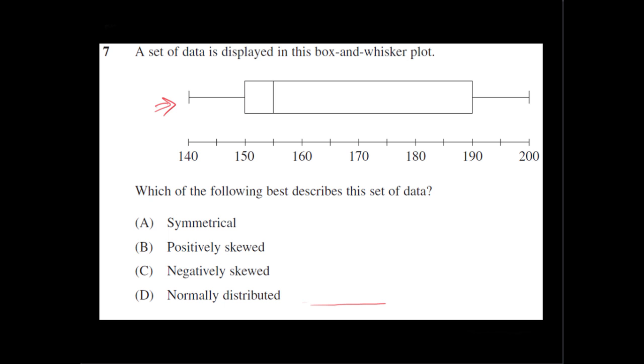Normally distributed graphs tend to be our bell curves. Okay, like this. So the peak being the mean.